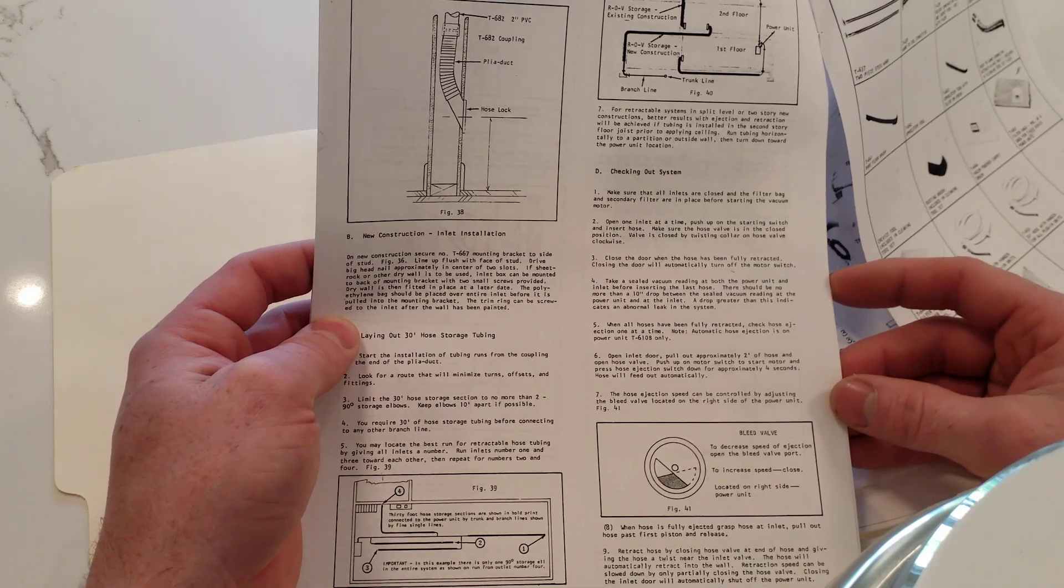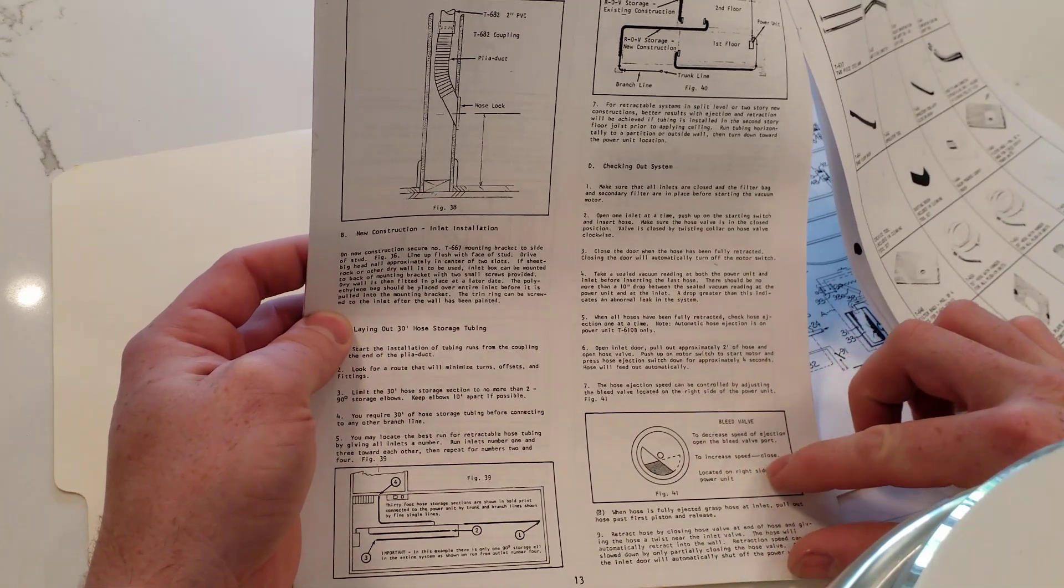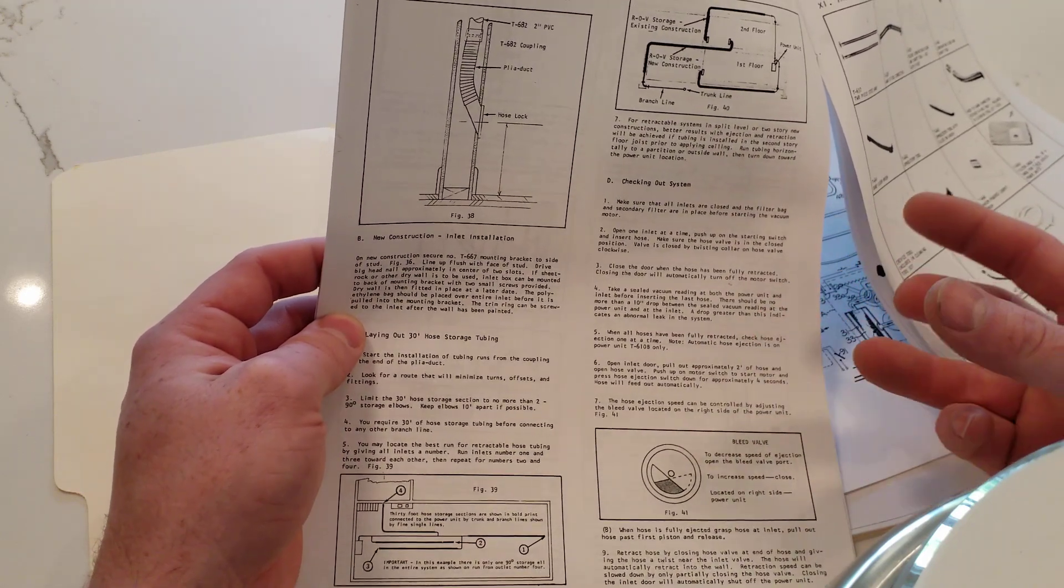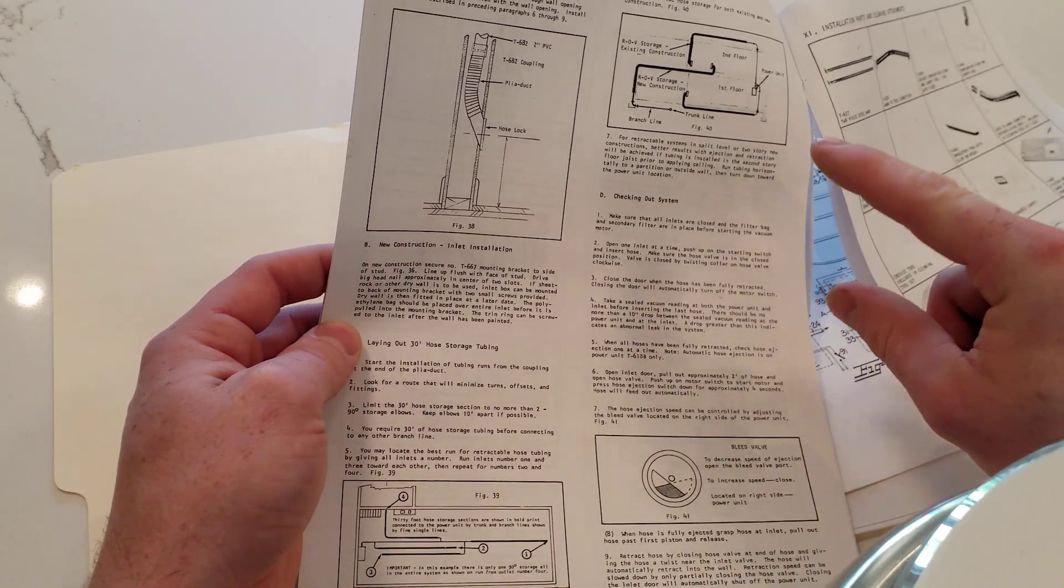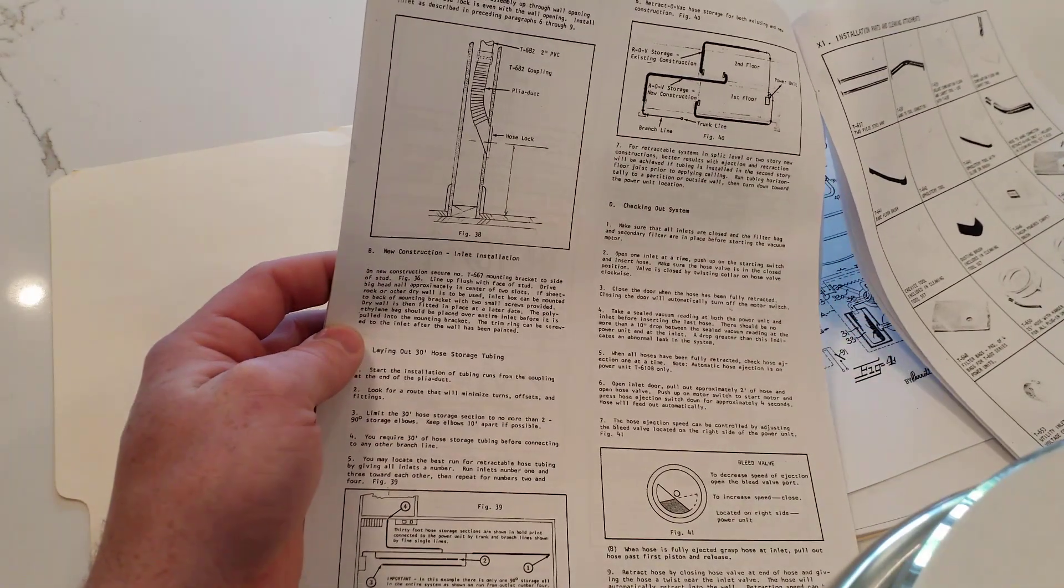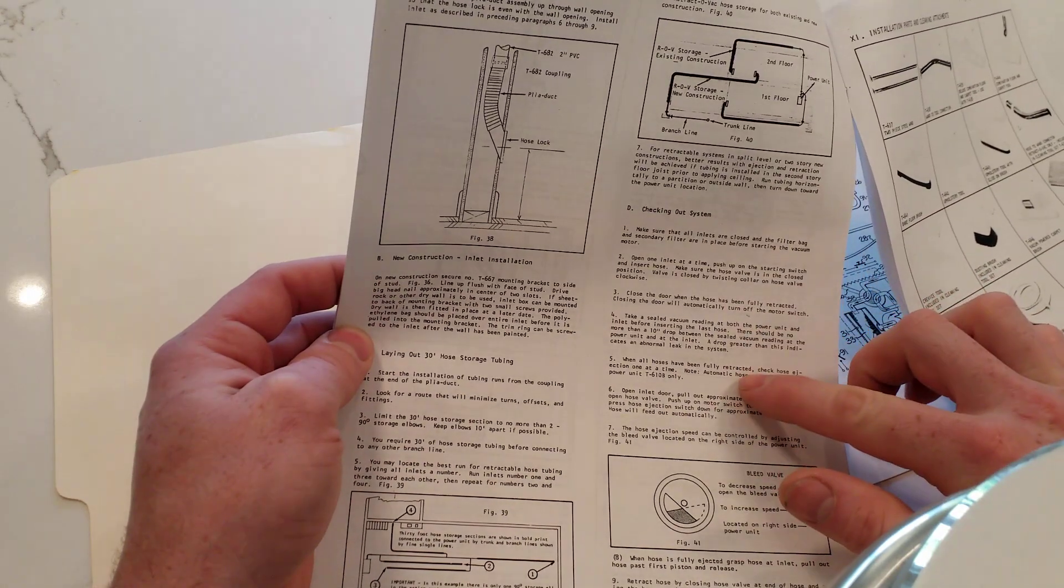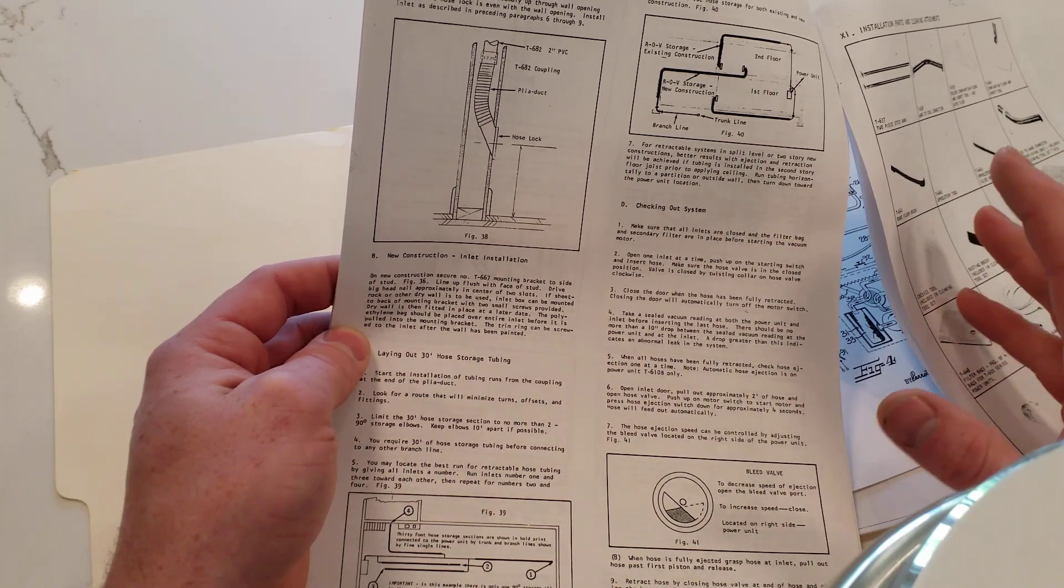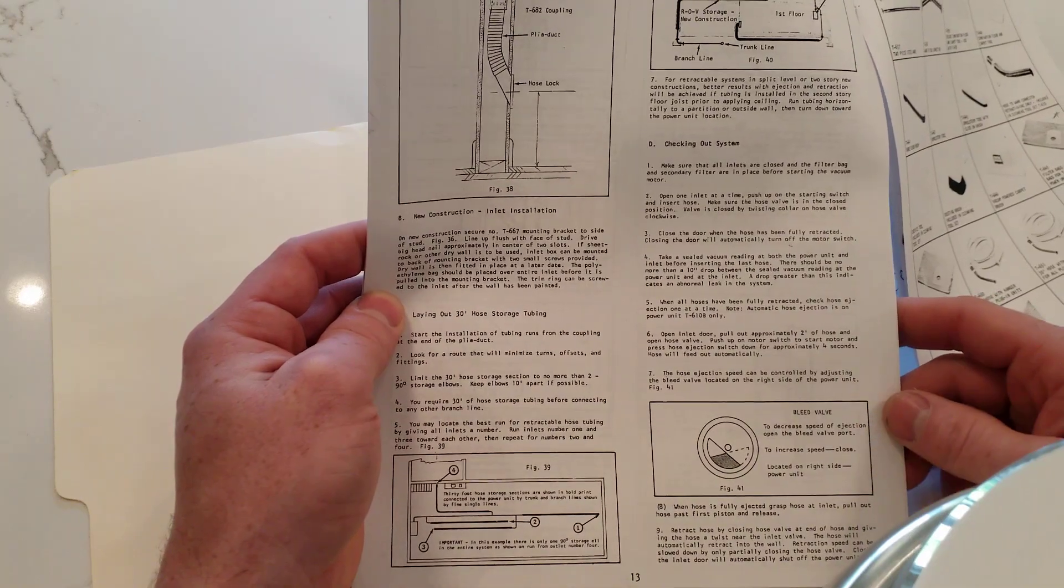But several cool things about this system, about the retract-o-vac. First of all, they had a bleed valve on the power unit, and the power unit had a solenoid inside. And you would push a button on the valve body, and it would reverse the airflow, literally blowing the hose out of the inlet. So it was automatic ejection and retraction. And they had just a retractable system that was one model, and then they had the fully automatic, the ejection retraction.